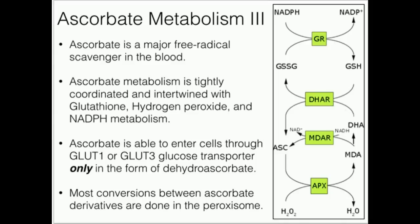This is what we call the ascorbate electron transport chain — a flow of electrons that shows how things occur. Keep in mind, ascorbate is one of the major free radical scavengers in the blood, though it is not the most major. In fact, the most major in humans is actually uric acid — something that's not really intuitive — but uric acid is the primary scavenger of free radicals in the blood. Ascorbate is a close second.